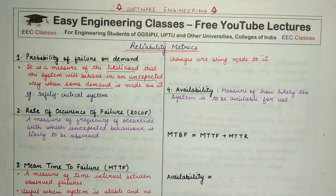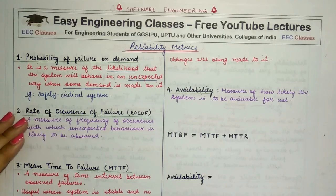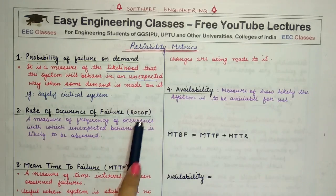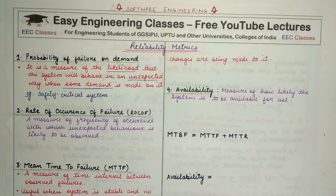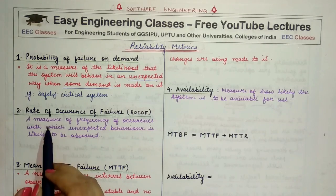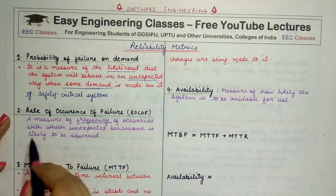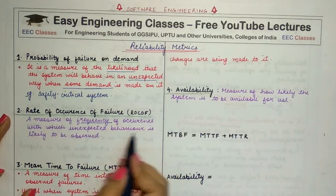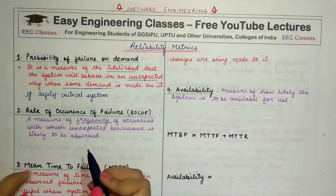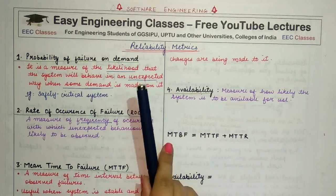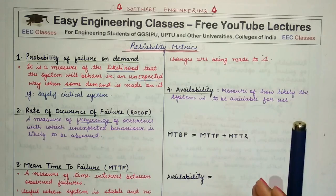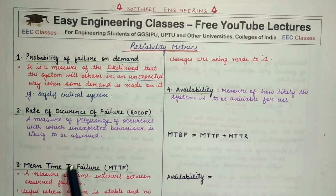The second metric is the rate of occurrence of failure, also known as ROCOF. The rate of occurrence of failure means how frequently our system or software will display unexpected behavior. It is a measure of the frequency of occurrence with which unexpected behavior is likely to be observed. The difference between the first two metrics is that the first tells us the chances the software will not behave correctly, while the second tells us how frequently it will not behave correctly.